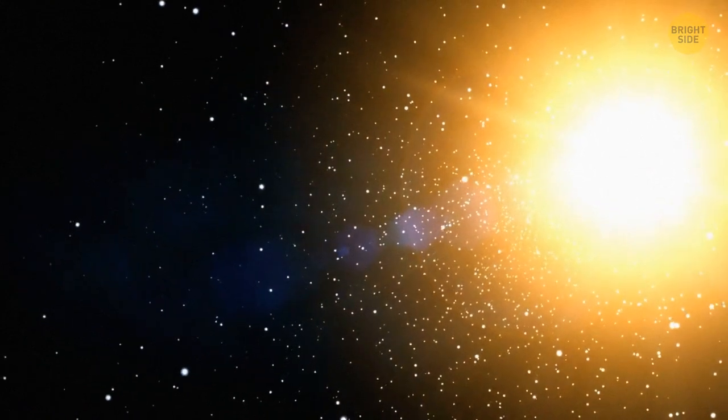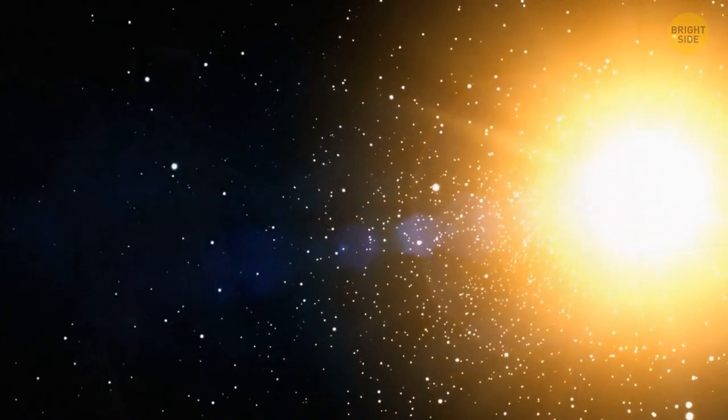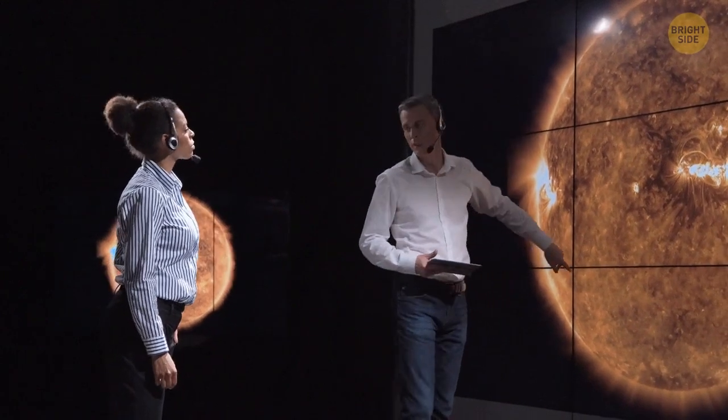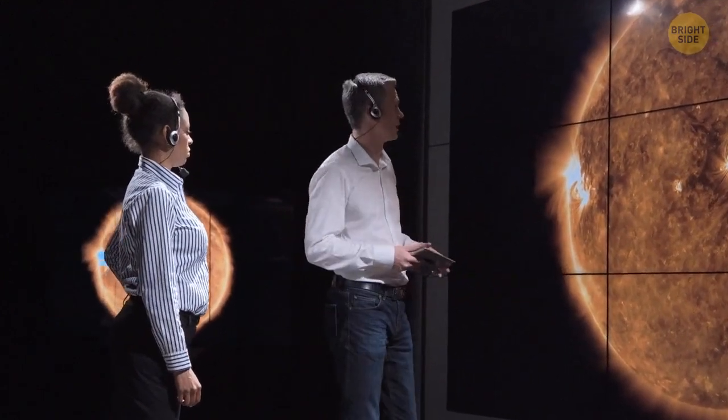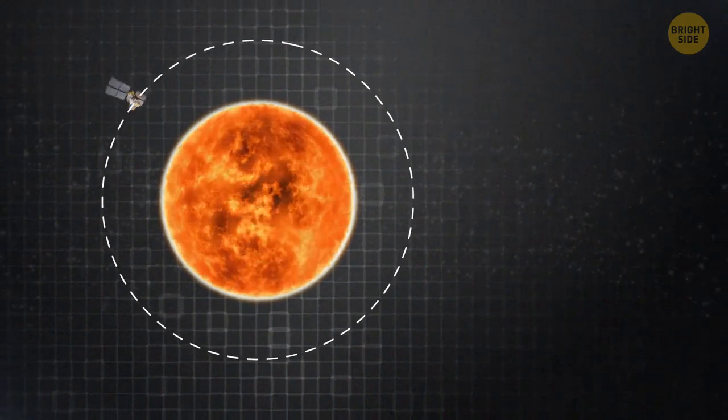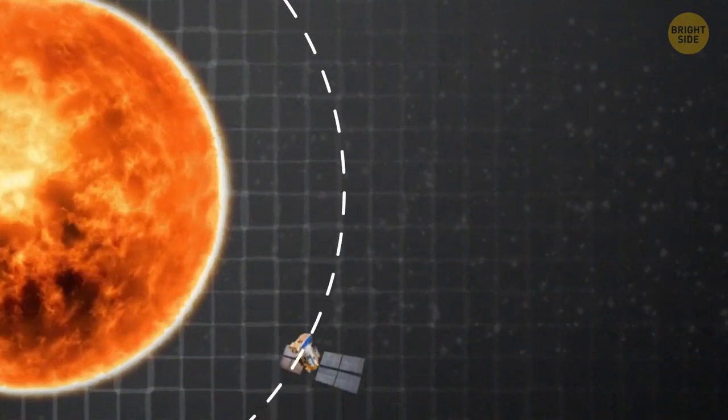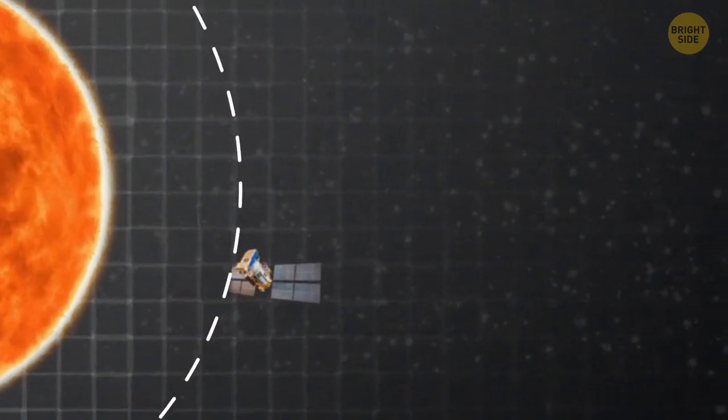These bumpy regions have such a shape because of the uneven flow of plasma from the surface of the sun. The larger and more powerful the flow, the farther the boundary is from the star's surface. But scientists don't know yet what exactly causes this difference. After making the flyby around the sun, the Parker Solar Probe continued its journey and started to move away from the star again.